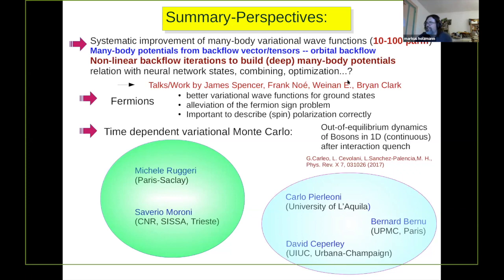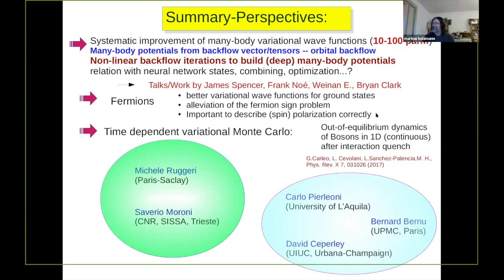It is a pity we cannot fully discuss the exact relation with neural network states and how one might combine these wave functions. There is always the question of addressing the thermodynamic limit, getting better wave functions for large systems. Another direction would be to use this for variational real-time-dependent problems in continuous systems — we started this in 1D with Giuseppe, but it would be nice to extend to 2D and 3D.